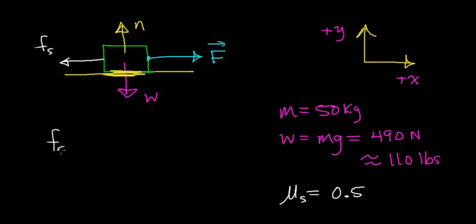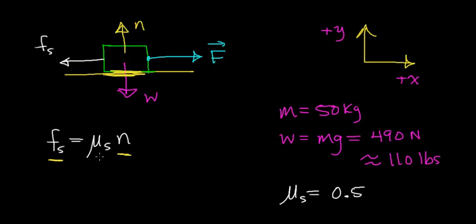There's a relationship between the force of static friction and the normal force. That relationship says the force of static friction is equal to the coefficient of static friction times the normal force acting on this object. The force of static friction is proportional to the normal force, and the proportionality constant is this coefficient of static friction. To figure out the force of static friction, we need to know what the normal force is acting on this object.